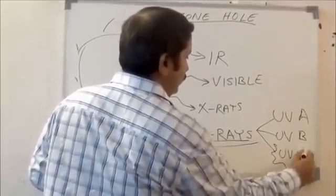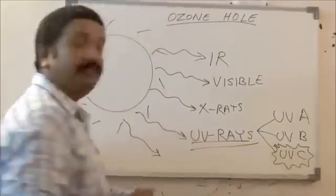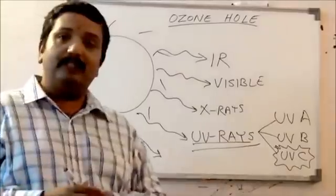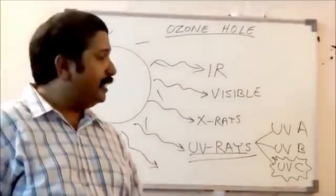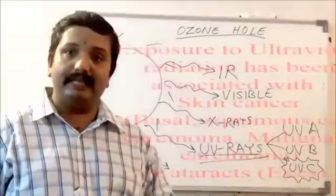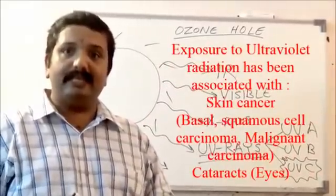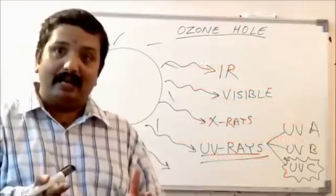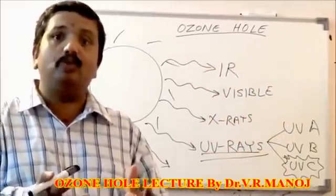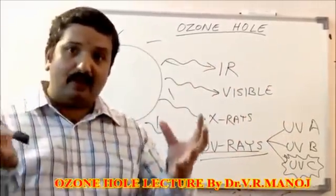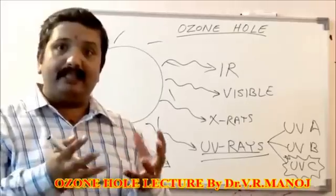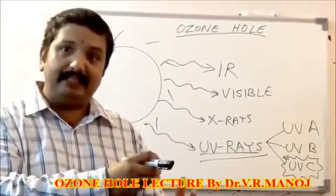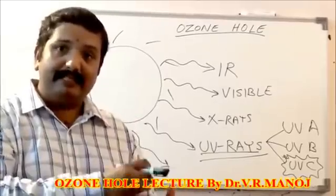UVC kind of radiation is extremely dangerous. If we are directly exposed to this particular kind of radiation, it becomes very harmful to our skin and can lead to skin cancer. That is why our Earth has a natural protective mechanism around it called the ozone layer, which is filled with molecules of ozone and serves to filter out ultraviolet radiation from directly entering into the Earth's atmosphere and affecting living beings.